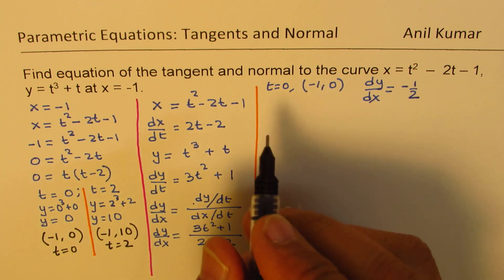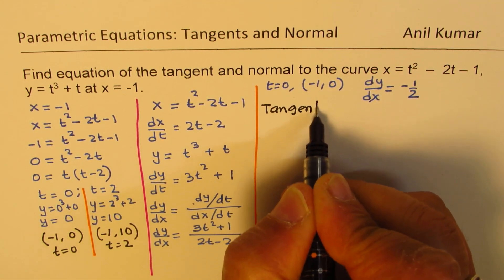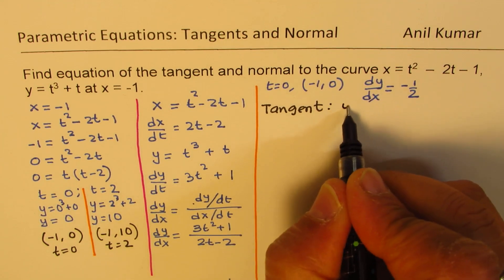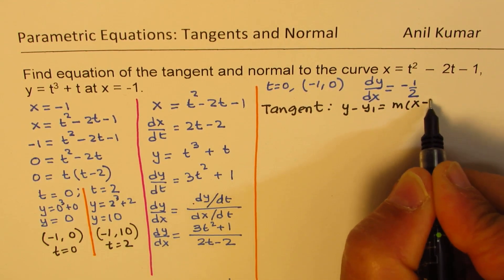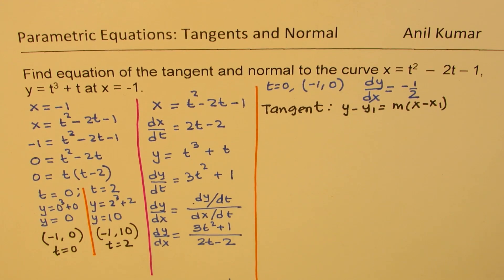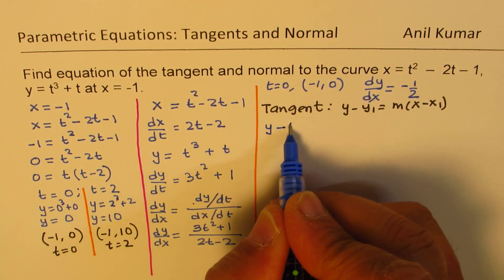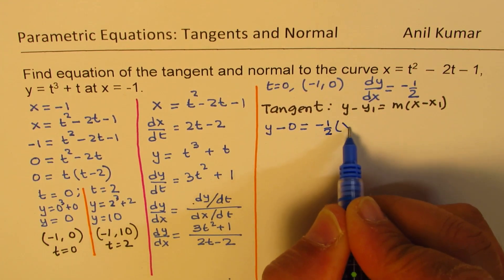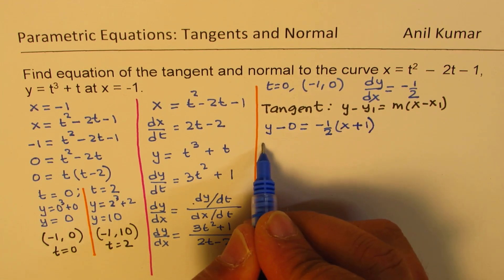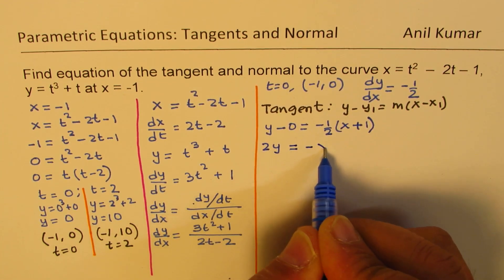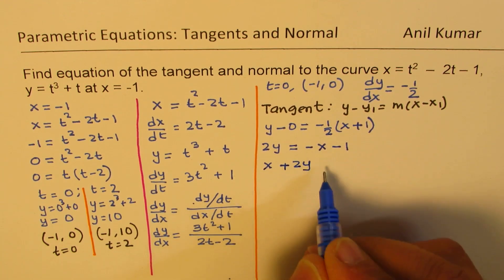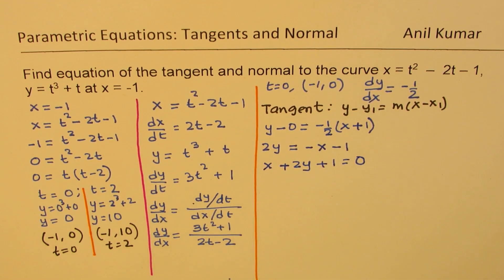Let's find the tangent at this point. The equation of the tangent is y minus y1 equals m times (x minus x1). We have slope minus one half and point (minus 1, 0), so: y minus 0 equals minus one half times (x minus minus 1), which gives x plus 2y plus 1 equals 0. That is the equation of the tangent.